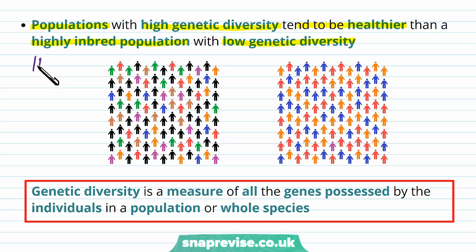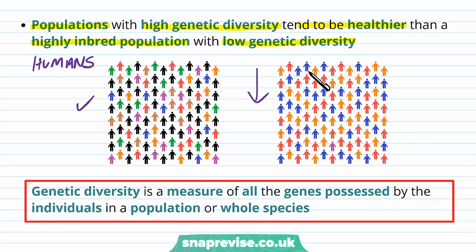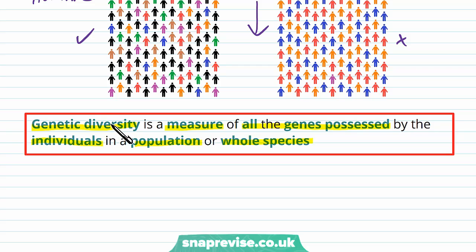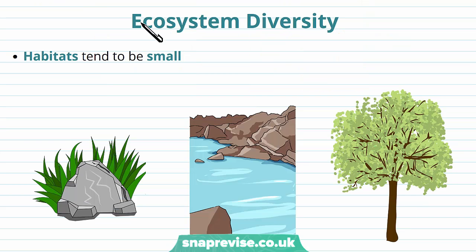As a general rule, a population with high genetic diversity tends to be healthier compared to a population that is highly inbred with low genetic diversity. For humans, a large population with large genetic diversity is healthier, as opposed to an area where inbreeding occurs, causing genetic diversity to decrease and genetics to become very similar. Genetic diversity is defined as a measure of all the genes possessed by the individuals in a population or a whole species. High genetic diversity means a greater mixture of genes; low genetic diversity means far less variety.